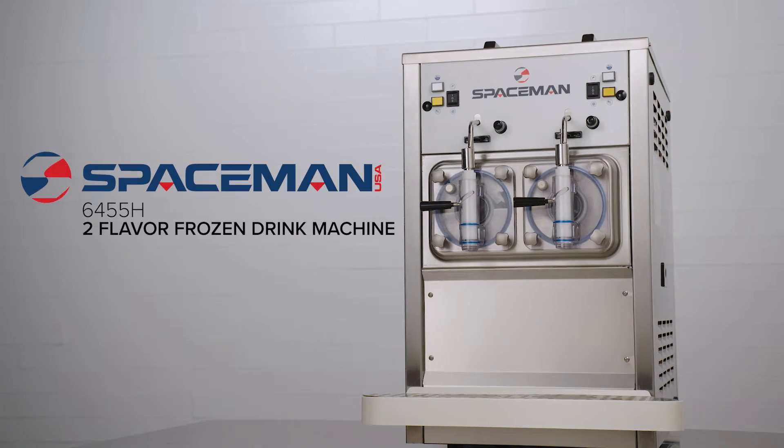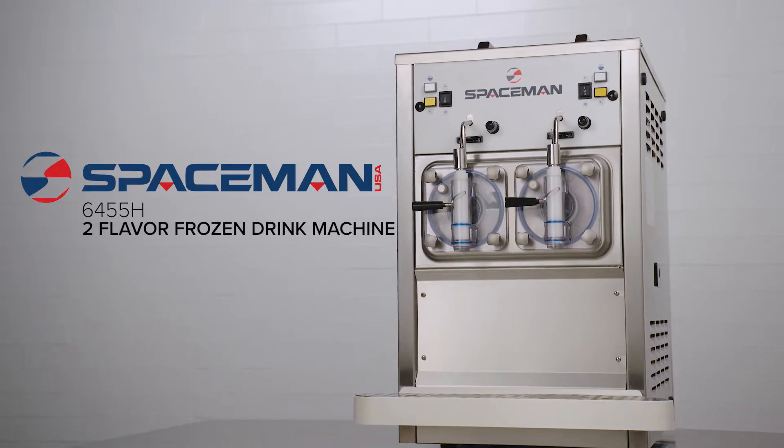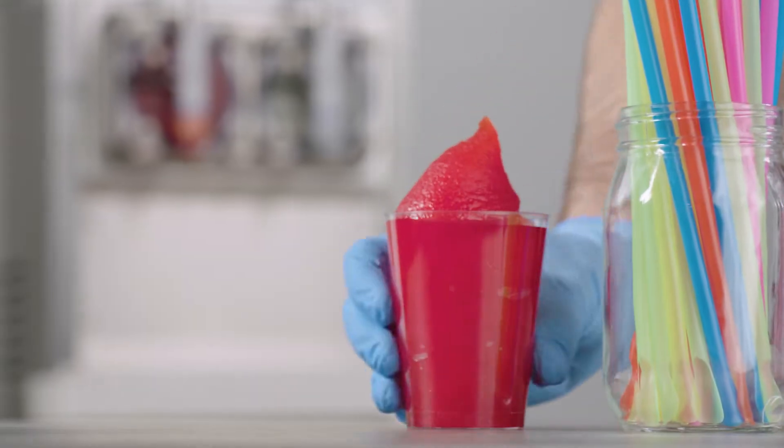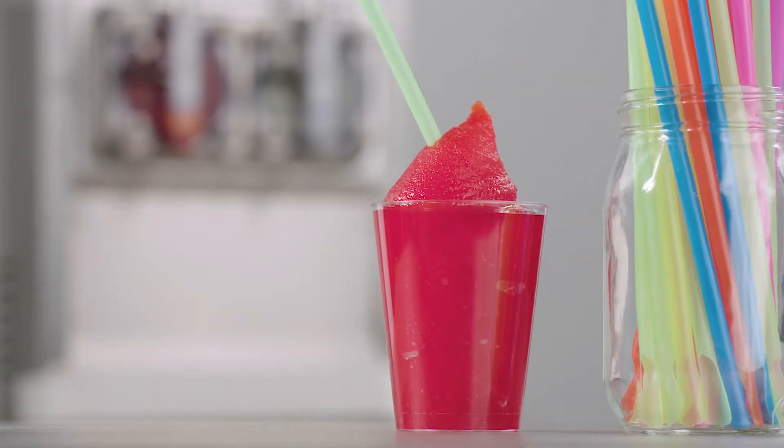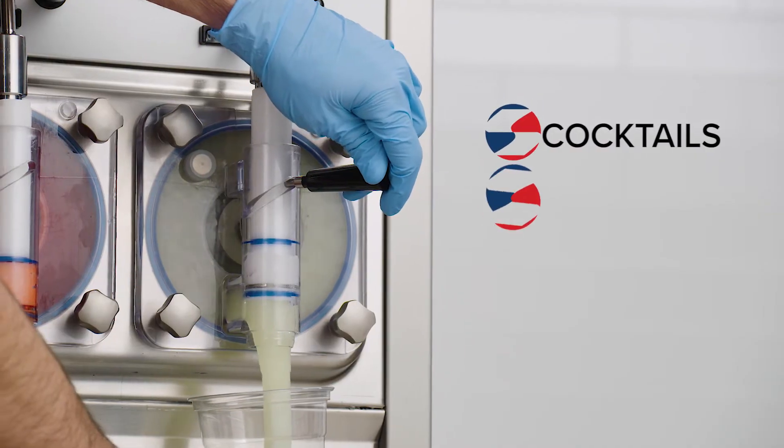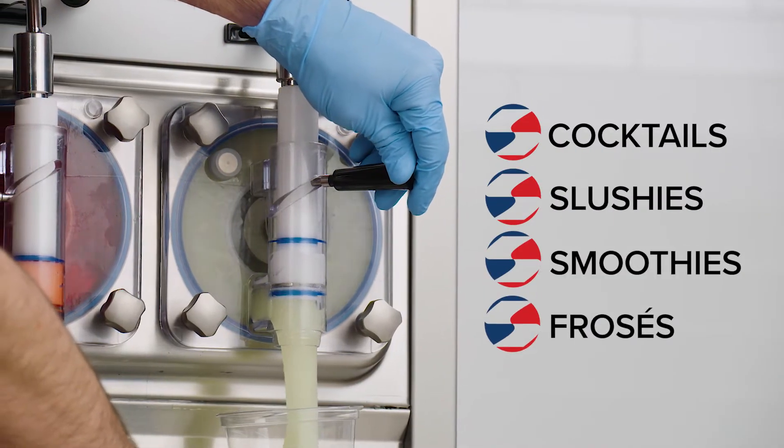Use the Spaceman 6455H two-flavor frozen beverage machine to serve tempting frozen beverages to happy customers. This unit can serve up to 100 servings per hour of 8-ounce frozen cocktails, slushies, smoothies, frosés, and more.